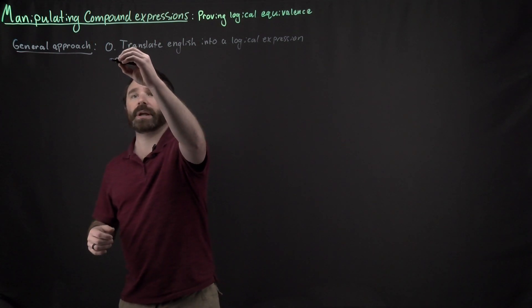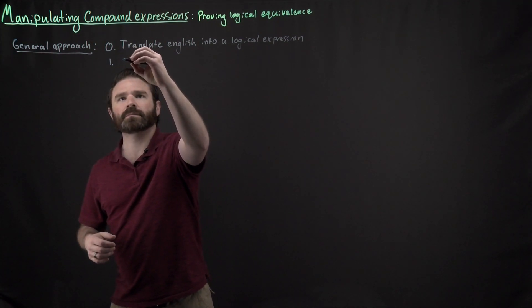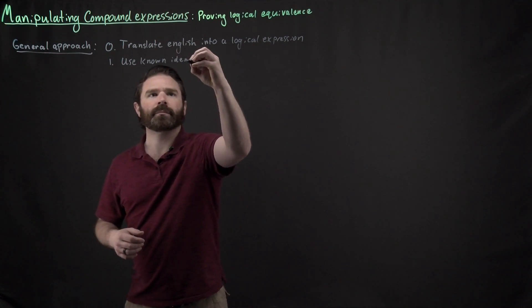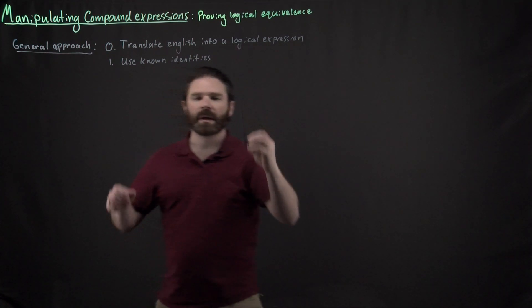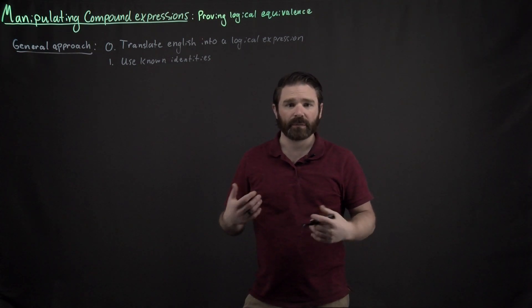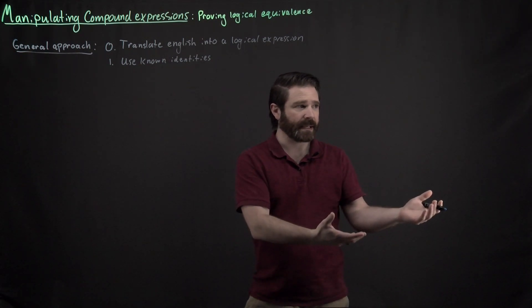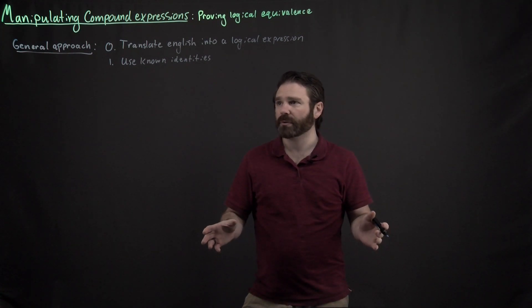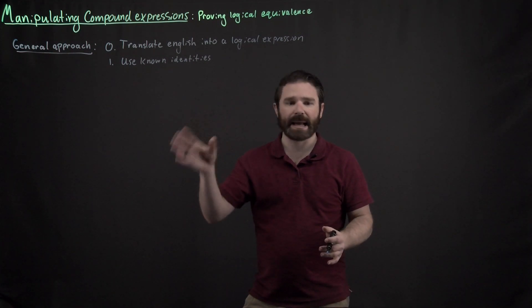After that, what we can do is utilize known identities. So if you've memorized some of the identities that we have seen in the various tables in Rosen, and you know those, we can go ahead and just apply them as is.